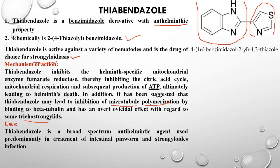Helminth cells carry out respiration via the electron transport chain and the citric acid cycle in the mitochondria. Thiabendazole blocks the citric acid cycle and production of ATP, depriving the parasite of energy. It also affects microtubules and the endoplasmic reticulum. Thiabendazole is used predominantly in treatment of intestinal pinworm and strongyloides infections.